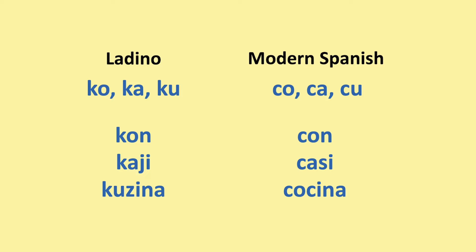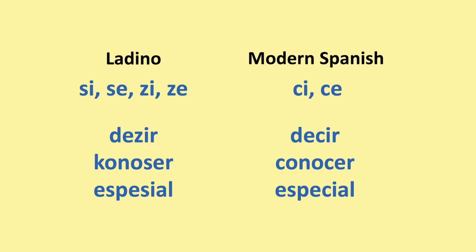The CI and CE in modern Spanish are usually SI/SE or ZI/ZE in Ladino. For example, 'dezir' instead of 'decir' or 'decir', 'konoser' instead of 'conocer' or 'conocer', 'espesial' instead of 'especial' or 'especial'.